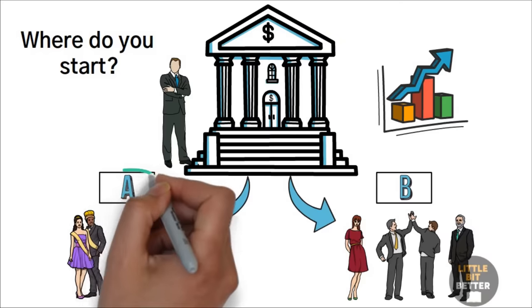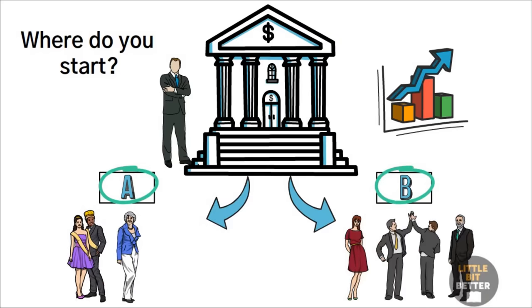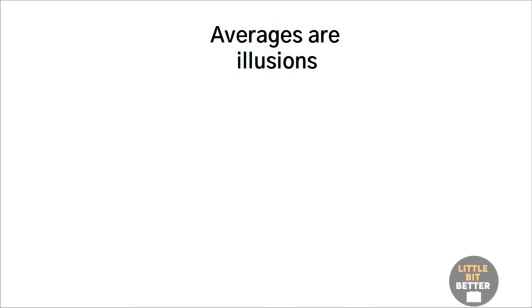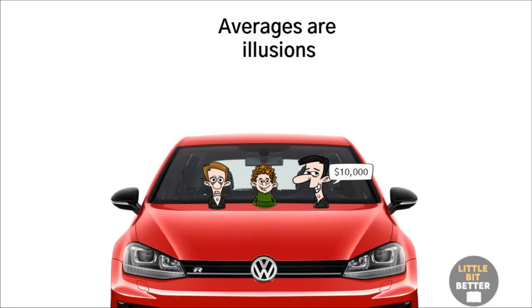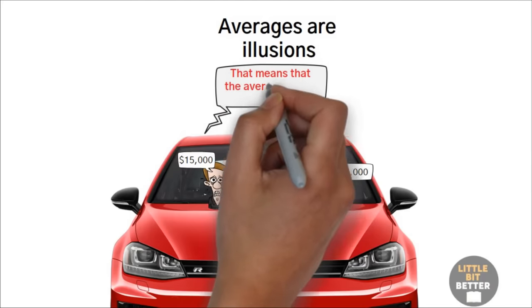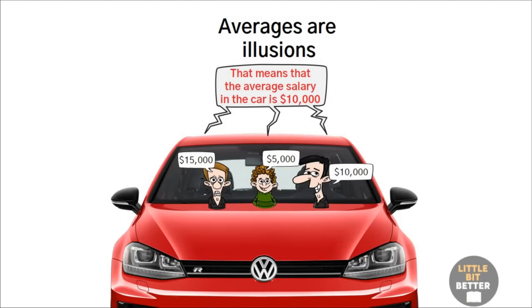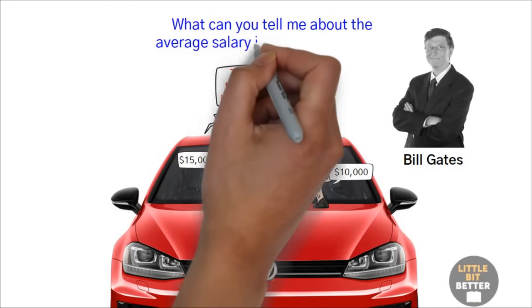Here's another experiment that can prove to you that averages are illusions and shouldn't be trusted. Suppose you and your two best friends are in a car. You make $10,000 a month, and one of your friends makes $5,000, and the other one makes an impressive salary of $15,000 a month. That means that the average salary in the car is $10,000, which is not a bad average at all. Now, suppose your friend stops to give his friend a ride, and his friend is no one but Bill Gates. What can you tell me about the average salary in the car now?